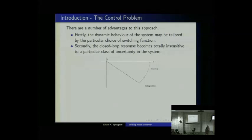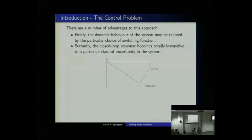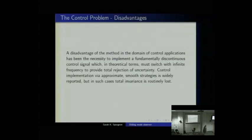The ability to specify dynamics becomes somewhat trivial for observers — zeroing the error between what the plant is doing and what the observer is doing is the design requirement. We want to do that as quickly as possible, much like the reachability problem. Robustness is clearly good because any model we make of a plant won't exactly match the real plant, so robustness is always an issue.